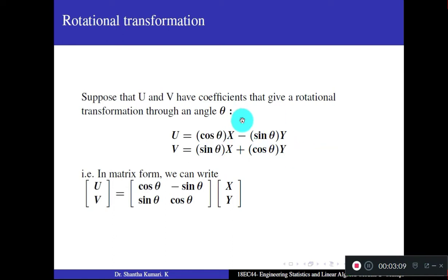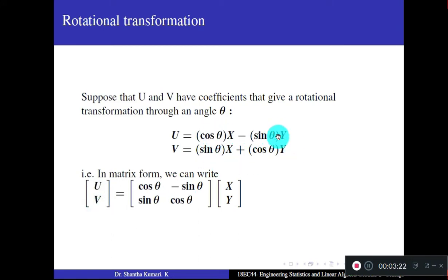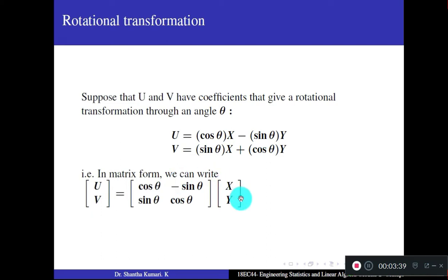In matrix form, the column vector [u, v] equals the coefficient matrix [cos θ, −sin θ; sin θ, cos θ] multiplied by the column vector [x, y]. When you multiply and equate corresponding entries, you recover the two transformation equations.